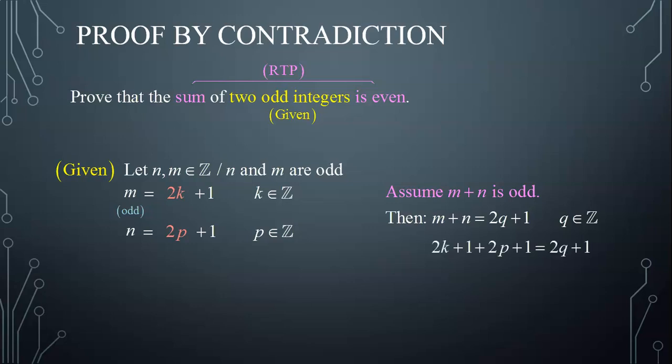I substitute the expressions of m and n, and simplify by adding similar terms on the left hand side, leading me to 2k plus 2p plus 2. I notice that on the left hand side, all terms have 2 as a common factor. So, factoring out 2 leads to 2 times (k plus p plus 1) equals 2q plus 1.